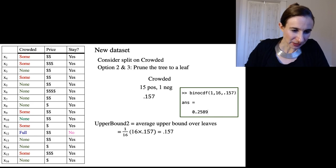Okay, so when I take the average again, since there's only one leaf, the average is quite simple. It's just the 0.157.